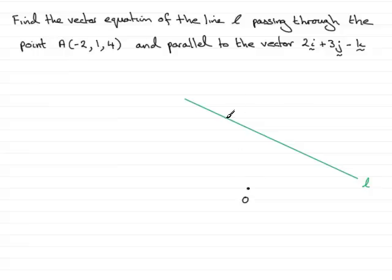So I'll imagine that this is the point A and it has coordinates (-2, 1, 4). So that means the position vector from the origin to A will be the vector (-2, 1, 4), and I can write that as a column vector.